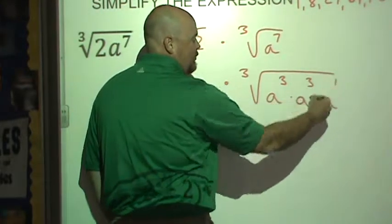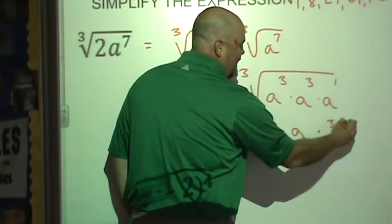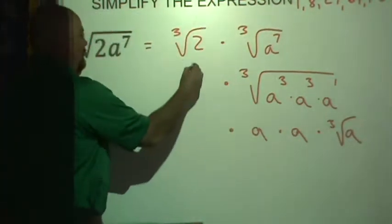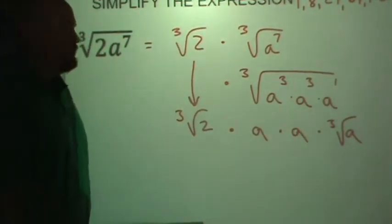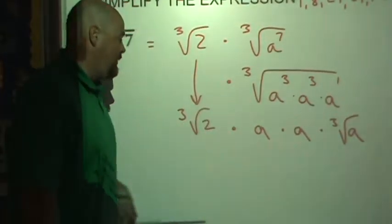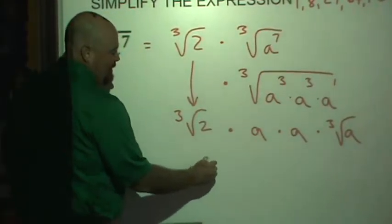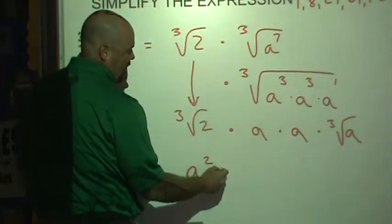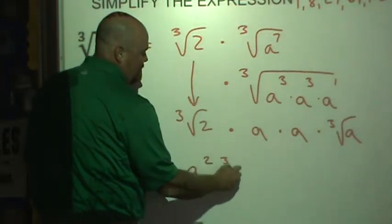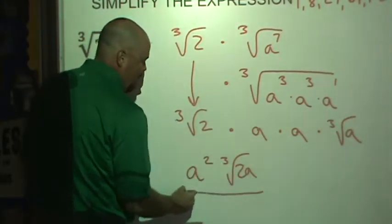Now I can't do anything with this remaining a, so I have to keep that cubed root there. And don't forget what we had from the beginning, this cubed root of 2. So I have two a's that aren't under that radical anymore. That would be a squared. But under the radical, when I put it back together, I've got the cubed root of 2a.